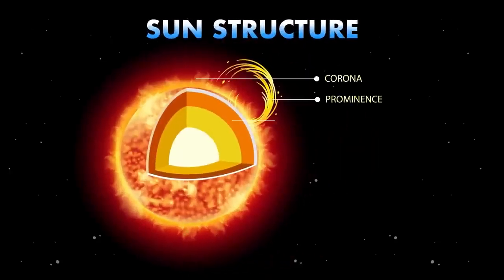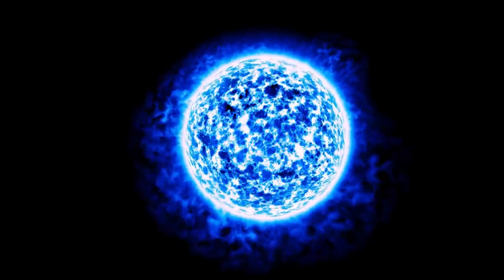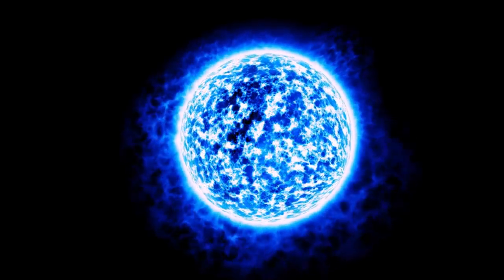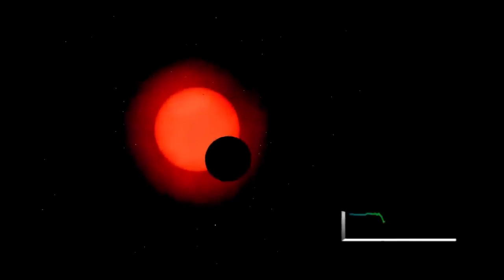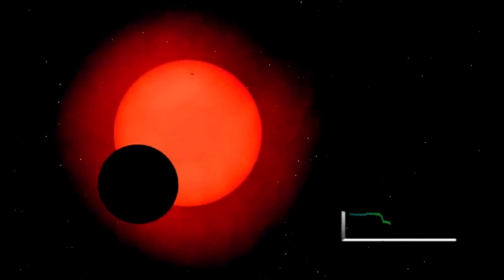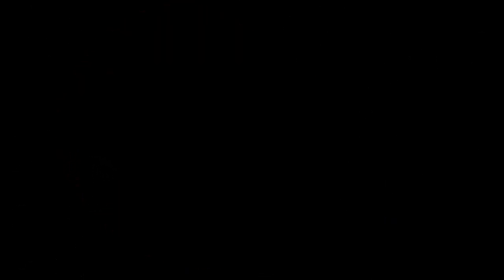The star would collapse in on itself in what's known as a core collapse supernova, an explosion so powerful it would release more energy in a few weeks than the sun will over its entire 10 billion year lifetime. During this event, Betelgeuse would briefly become as bright as the full moon, visible in the daytime sky.